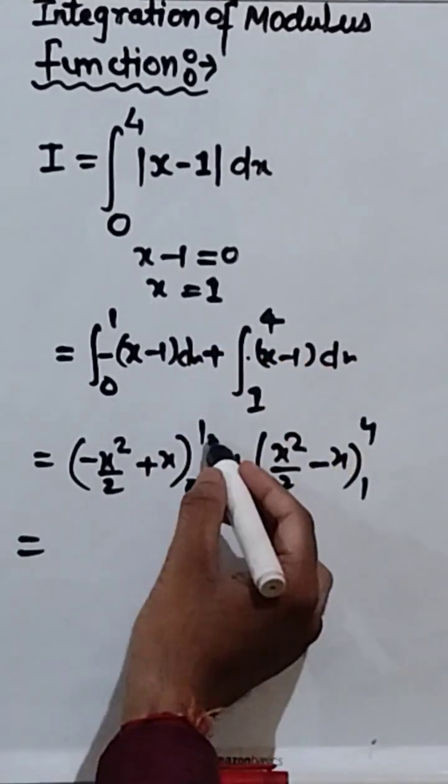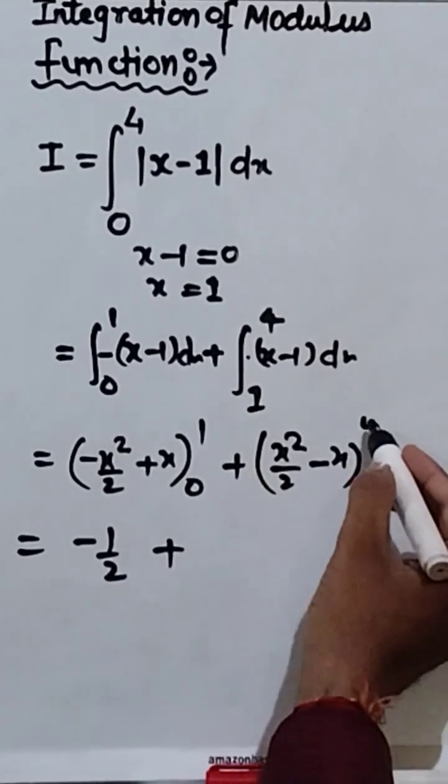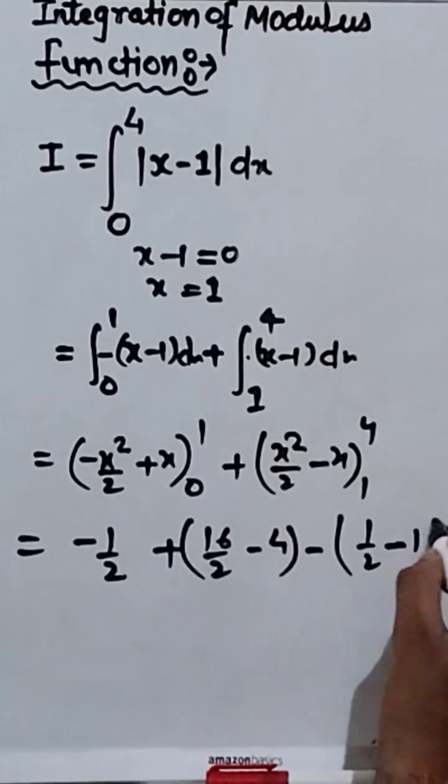Here 1, 4. First of all, write 1. So we get 1 upon 2. If you take 0, we get 0. Plus, if you take 4, so we get 16 upon 2 minus 4. If we write 1, so we get 1 upon 2 minus 1.